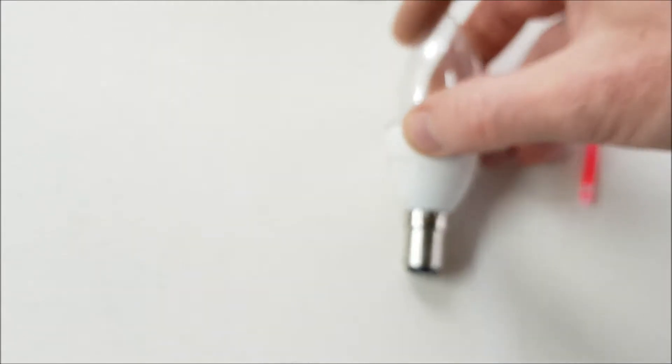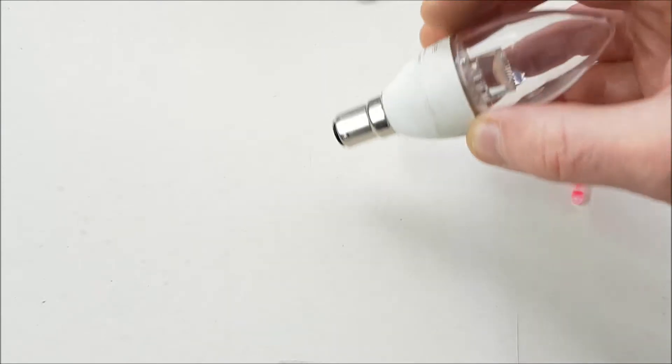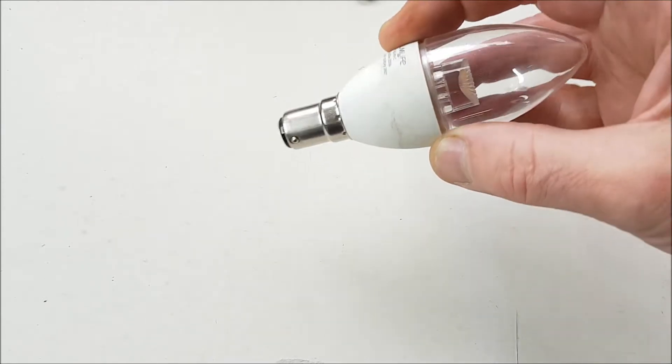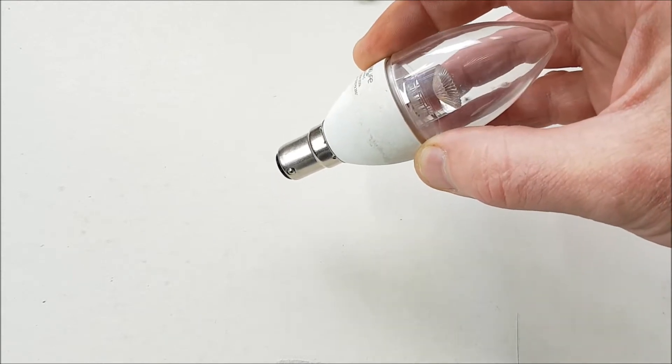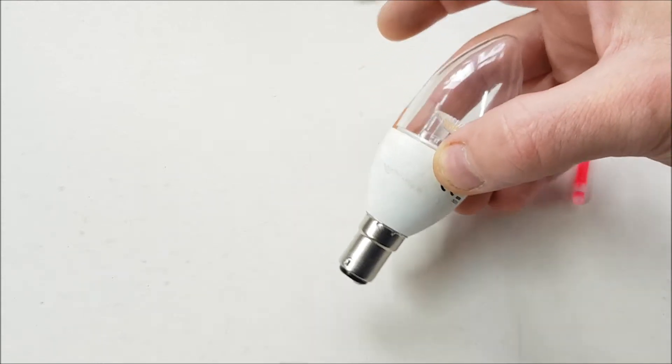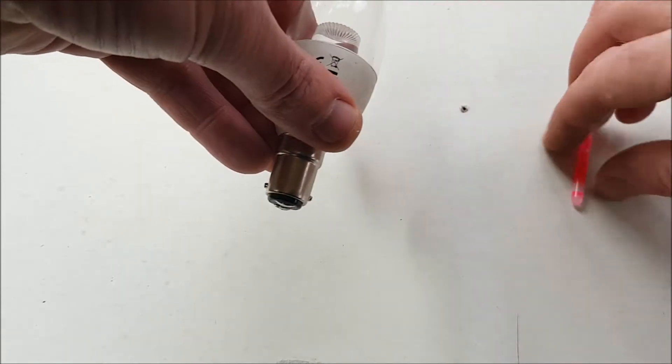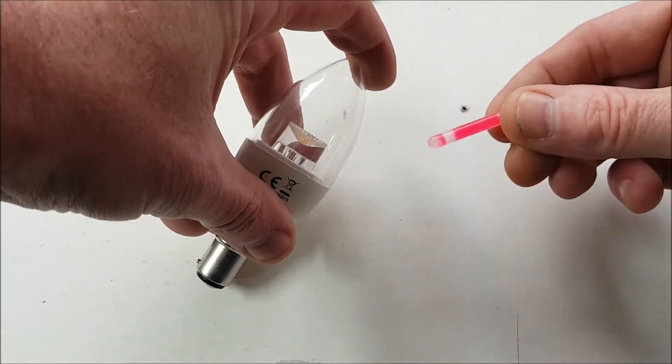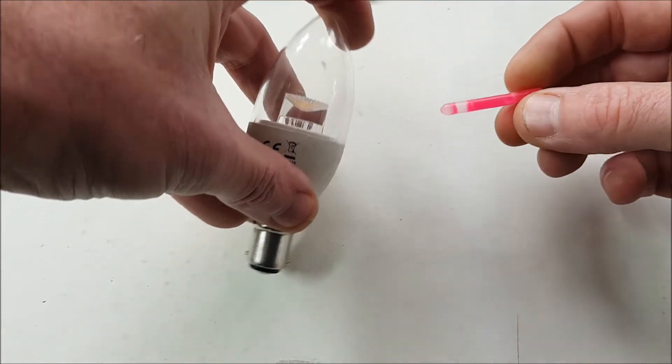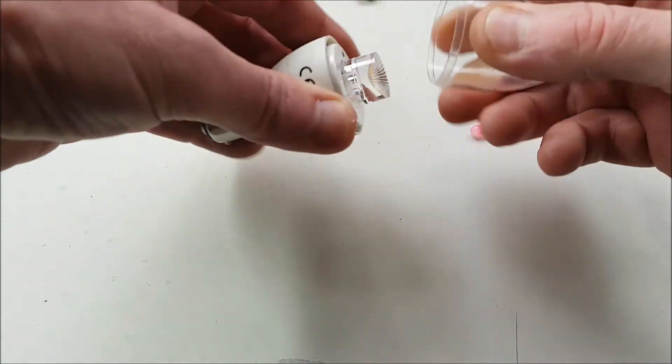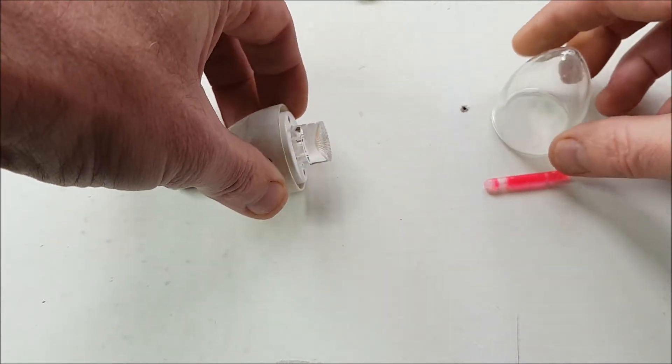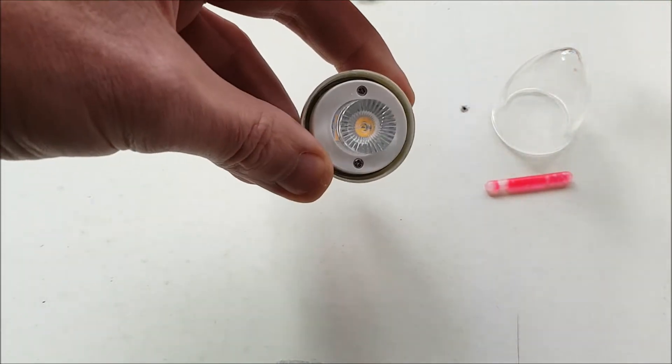Okay, I think this light bulb here has got the makings of a good fishing bobber or float. I'm going to make it so we can stick these glow sticks in it. Let's strip it down and see what we can do with this.